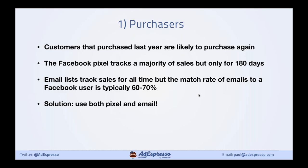How do we find those previous purchasers? Two ways. First is the Facebook Pixel — very high match rate, you can find most people who purchased through your website. But the pixel only goes back 180 days, so we can't go back to last Christmas. The way to find those people is to use our email lists, though the match rate is only about 60 to 70% for consumer brands. We basically need to use both — build an audience of purchasers from the pixel and by email.